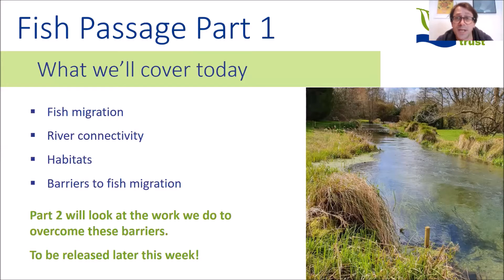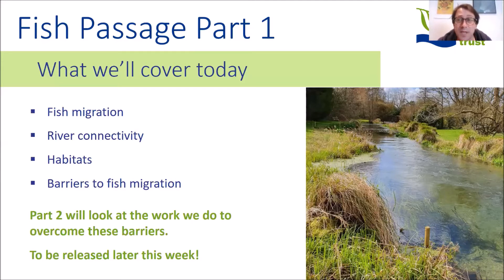So I'm just going to talk about what we're going to cover today. We're going to be talking about fish passage — what does it actually mean? We'll break it down into the fish part and the passage part. The fish part covers fish migration, and the passage part covers river connectivity and access to certain habitats. We'll talk about what those specialised habitats are, why fish need to move around their catchments, and then specifically about barriers to fish migration — in-river structures like weirs and locks that separate fish from those habitats. My colleague Toby will talk in part two about some of the work we've done to address fish passage issues.